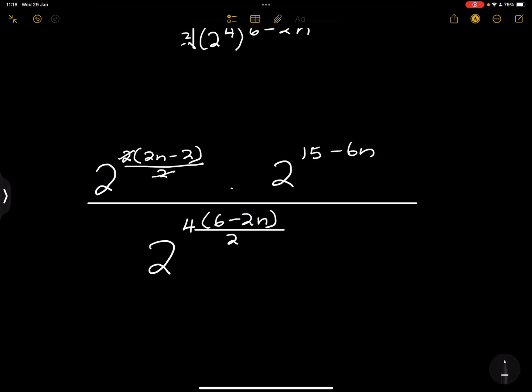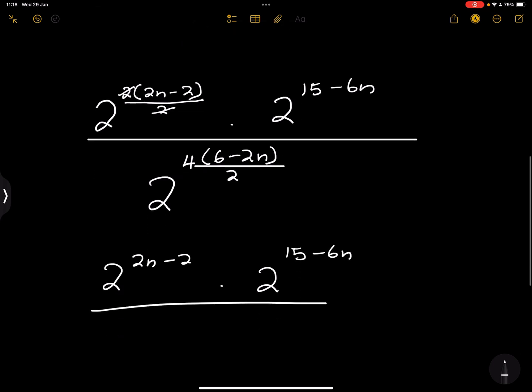So now we can be able to solve. So the 2 and the 2 can cancel out, so I'm left with 2 raised to the power 2n minus 2, times 2^(15 minus 6n), divided by...